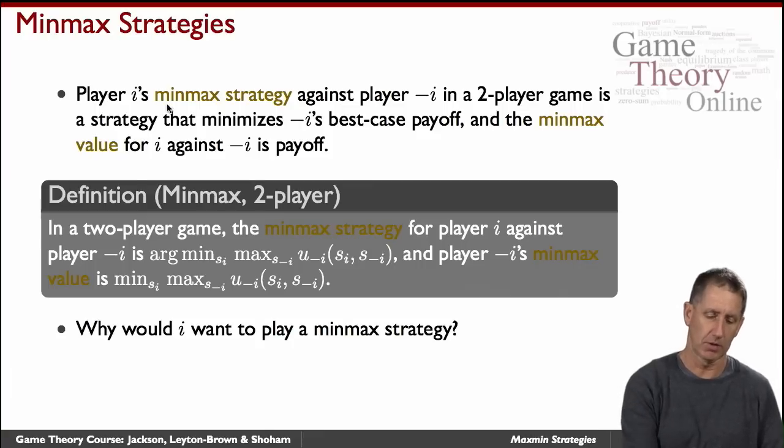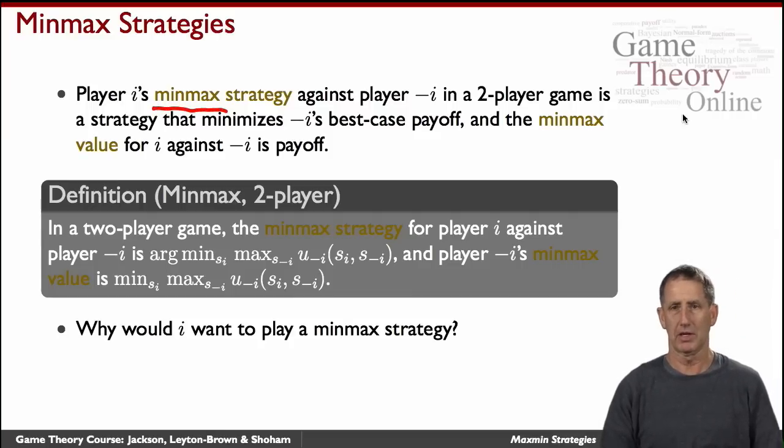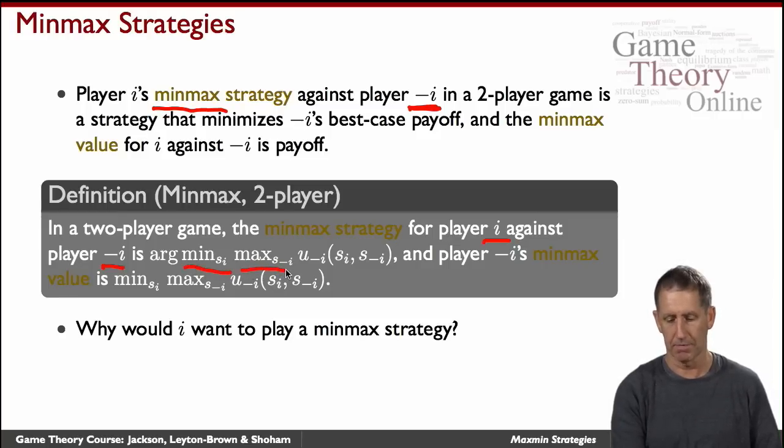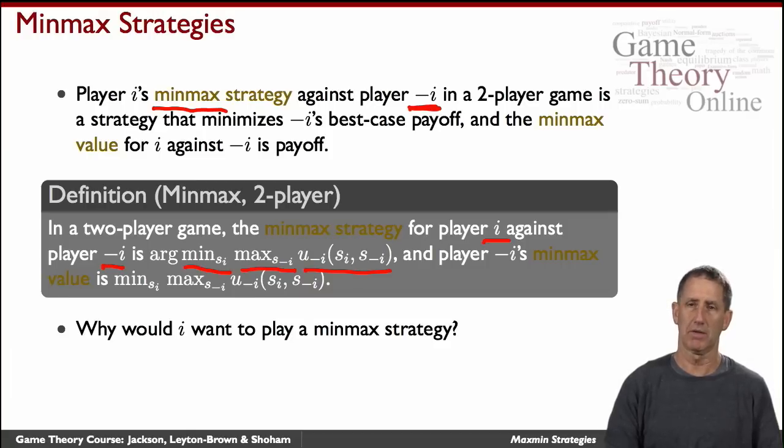And just to confuse things, we'll also speak about the minmax strategy. The minmax strategy is strategy against, if you wish, the other player in the two-player game. Minmax strategy is the strategy that minimizes their payoff on the assumption that they're trying to maximize it. And so here is the formal definition. The minmax strategy for player i is playing against the other guy, which we denote by minus i, is the strategy that minimizes the maximum payoff as attempted by the other guy of the payoff to the other guy. And the minmax value is simply the value of that minmax strategy.